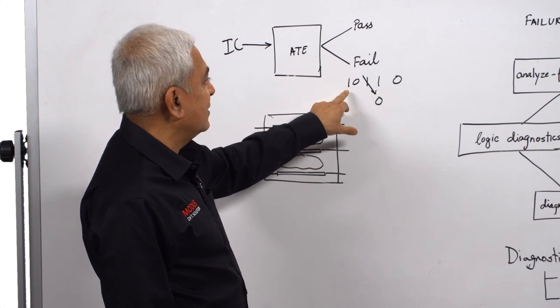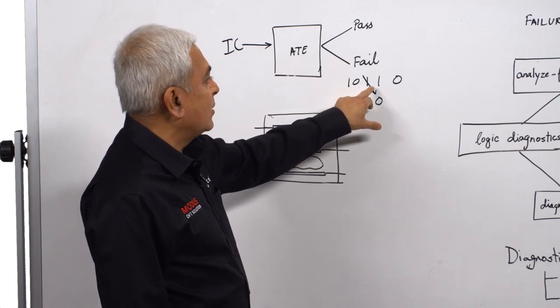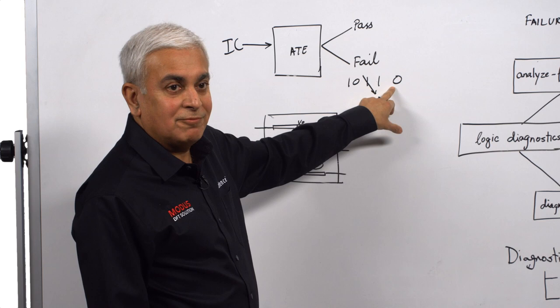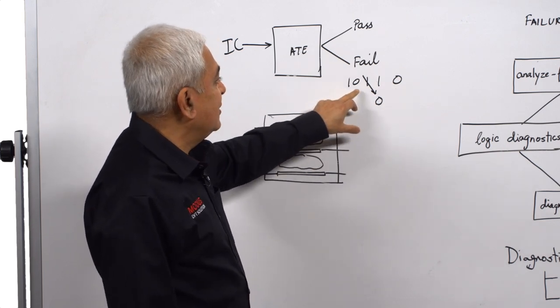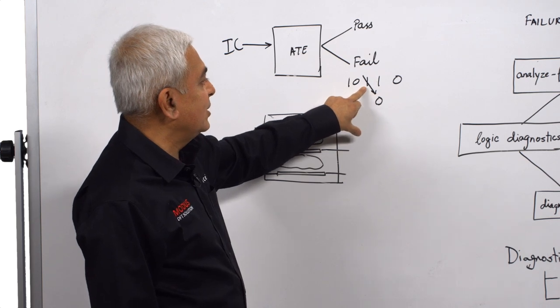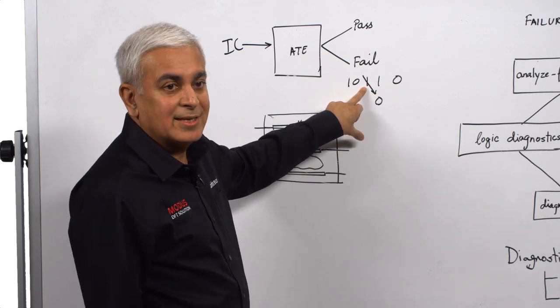In this particular example that I have here, 10110 is the good response. So if we see that, the chip is a pass. And if we don't see that, and let's say there was a zero in the place of this one, we say it was a failure.